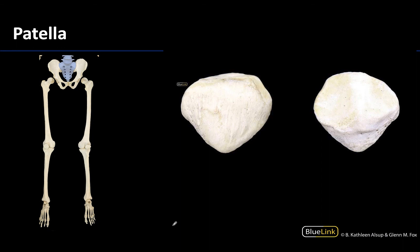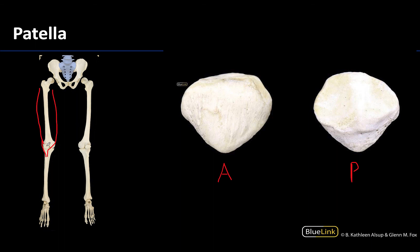Looking at the patella, it is going to be located on the patellar surface — the anterior distal surface of the femur. Recall these are sesamoid bones, meaning they form within tendons; the patella forms within the quadriceps tendon, and its tendon extends down as the patellar ligament. This is an anterior view of the patella and this is a posterior view — the posterior view is nice and smooth because it's directly articulating with the femur and has articular cartilage there, whereas the anterior side is a little rougher because it is not an articular surface.